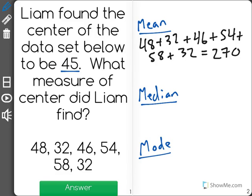Then what we do is we count how many numbers there are in the data set. How many pieces of data do we have? In this case we have 6. And we take our total 270 and divide it by 6. That will give us the mean or the average, which in this case is 45.